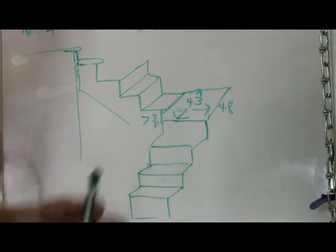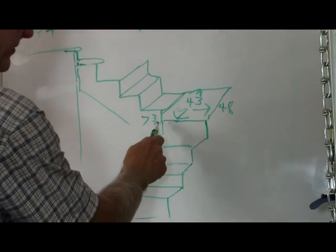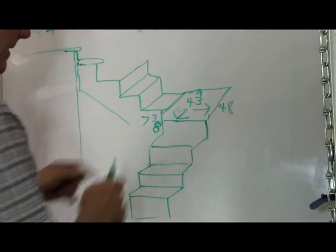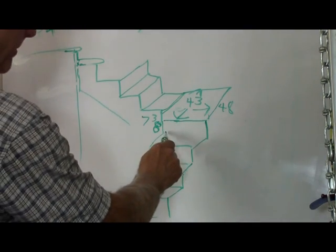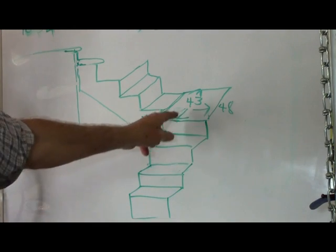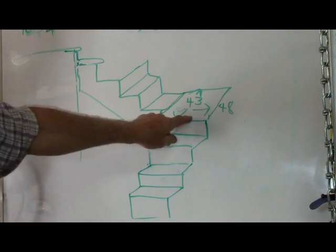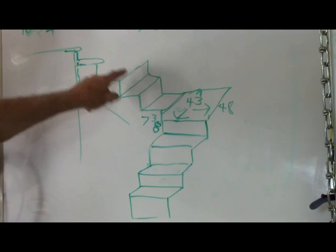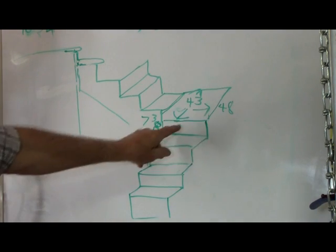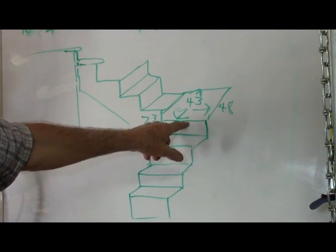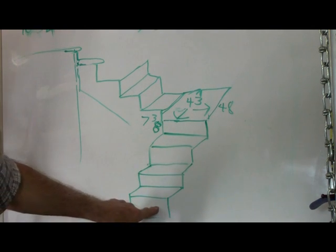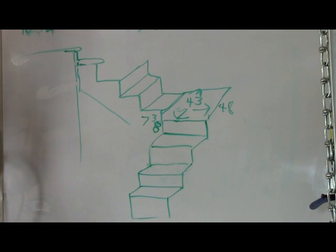So it doesn't matter. We know these risers are seven and three-eighths of an inch high. But even on your landing, as you're coming down and turning and coming this way, this landing is still going to remain seven and three-eighths inch high along with the others coming down to the bottom floor.